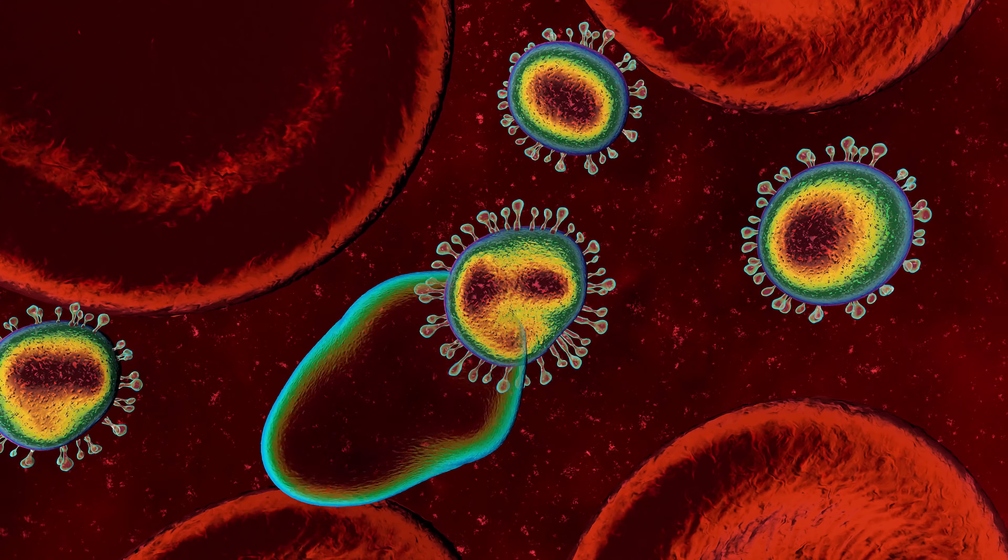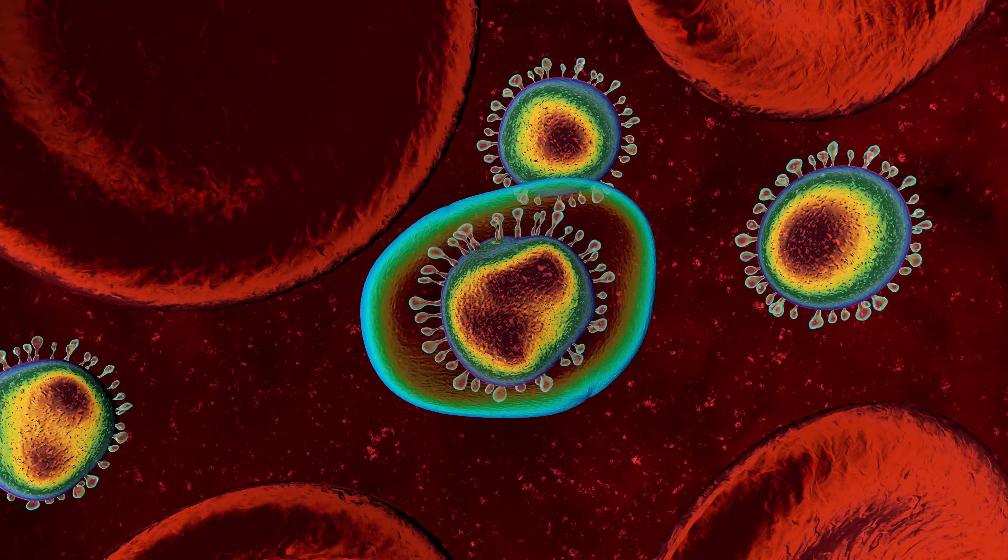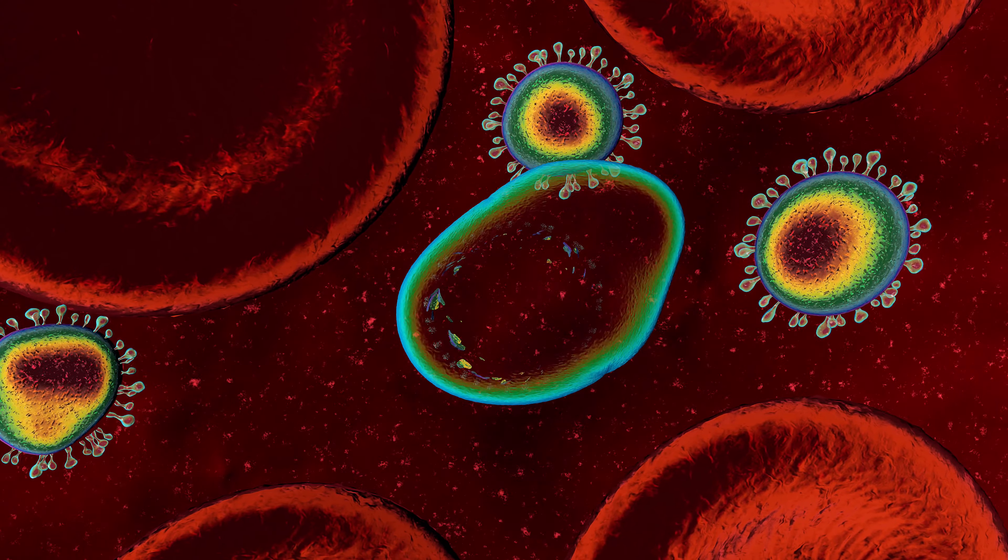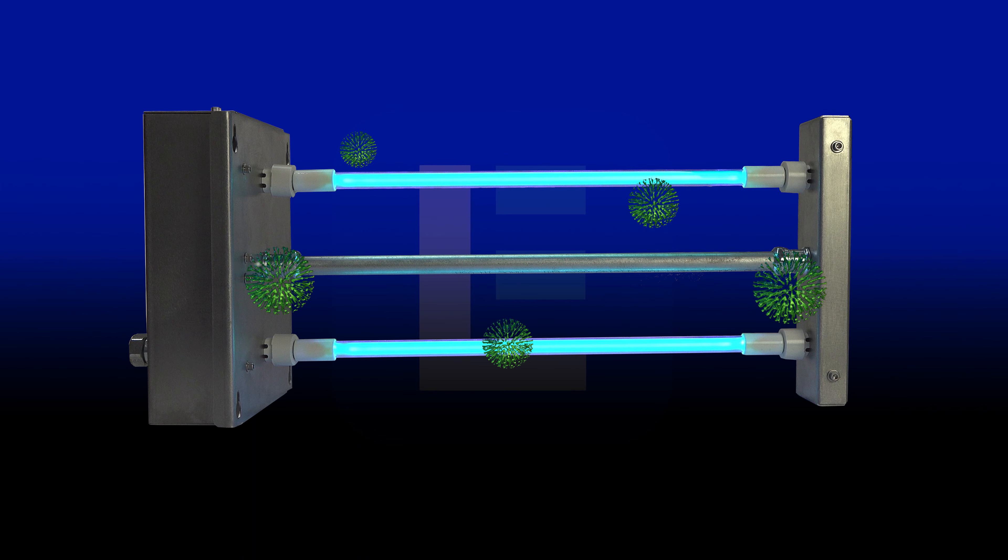To better understand how UV light kills viruses, bacteria, and mold, you must first understand the various wavelength ranges of UV light as well as the makeup of viruses and bacteria in order to understand what can kill them.